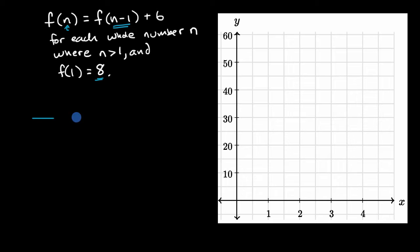All right, now let's work through this together. So let me in this column have n and here I will have f of n. So we'll start with n equals one. That's pretty straightforward. They tell us that f of one is equal to eight.